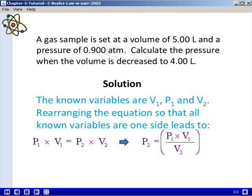When we do this, we see that the final pressure, or P2, is equal to P1 times V1 all over V2. So our final pressure is equal to the initial pressure times the initial volume, all divided by the final volume.